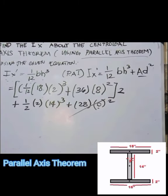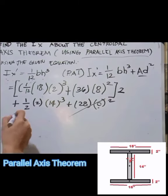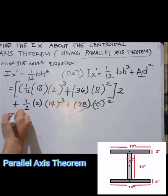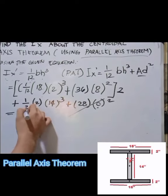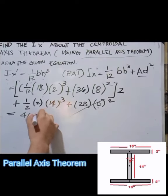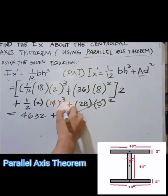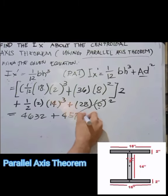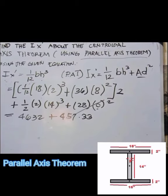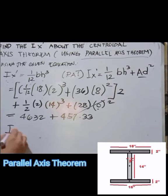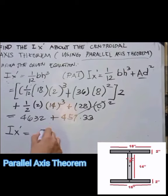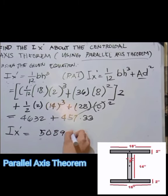The total is 4632 + 457.33, giving Ix' = 5089.33 in⁴.